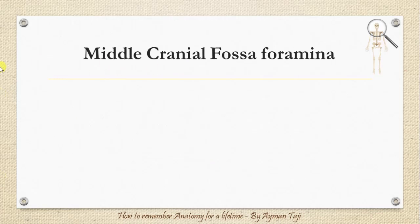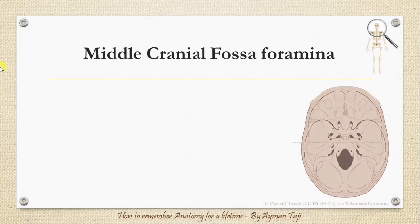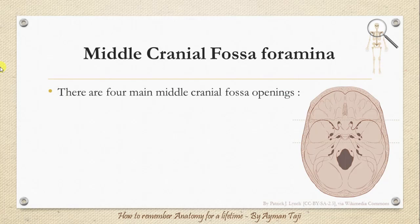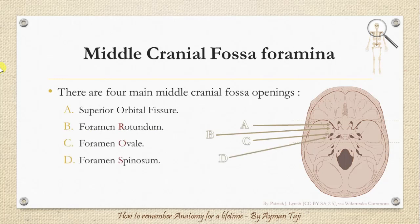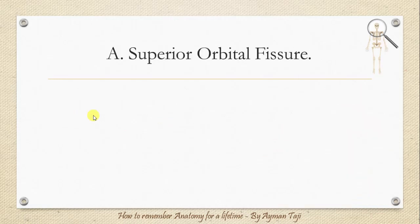Now the middle cranial fossa and its foramina. The middle cranial fossa has four main openings: the superior orbital fissure, foramen rotundum, foramen ovale, and foramen spinosum. To remember them, you can just remember that the middle cranial fossa has the superior orbital fissure and 'ROWS' for rotundum, ovale, and spinosum.